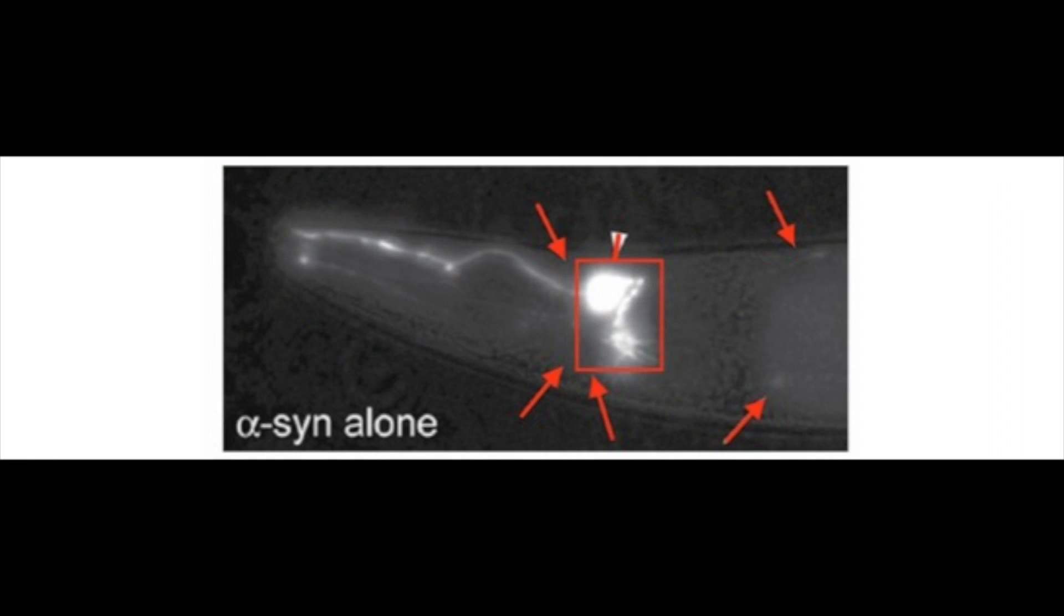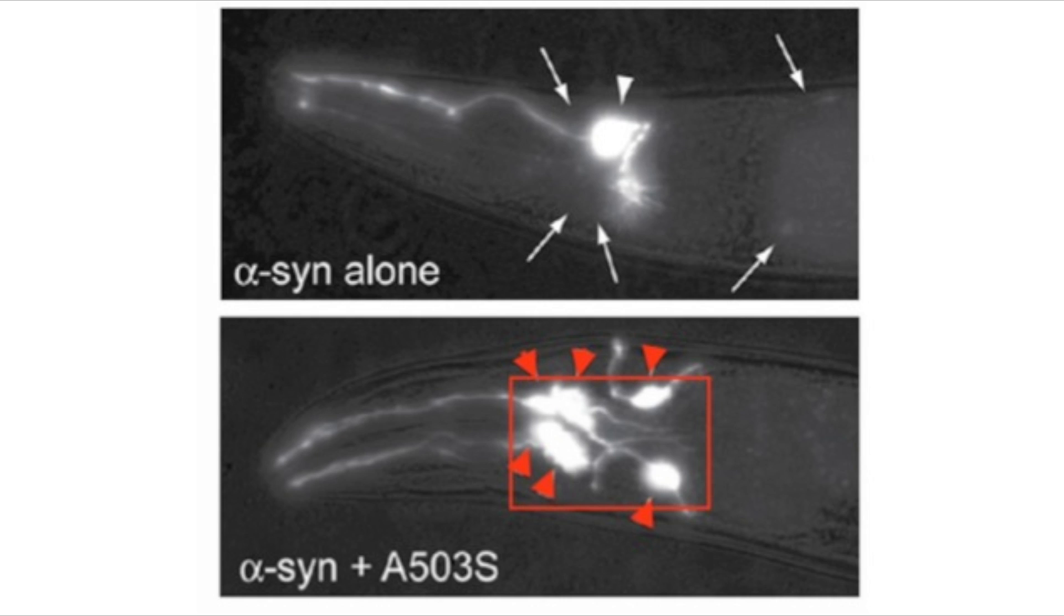In addition, in a metazoan model of C. elegans, in the presence of only alpha-synuclein, few dopaminergic neurons were found. However, in the presence of alpha-synuclein as well as the HSP-104-A503S mutant, more dopaminergic neurons were found to be present, demonstrating that this HSP-104 mutant was able to rescue dopaminergic neurodegeneration.